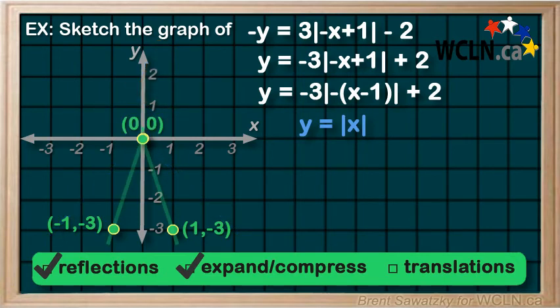We can stop and consider our current version of this relation at this point. y equals negative 3 absolute of negative x.